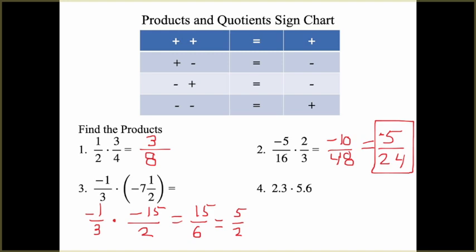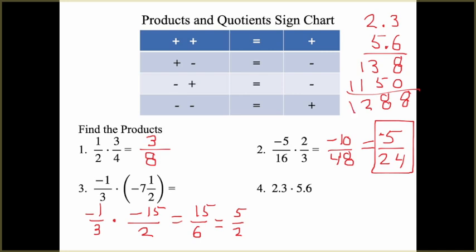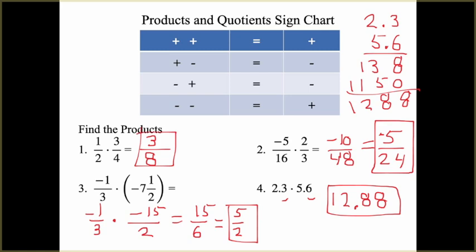Next, we have 2.3 times 5.6. Multiplying these out we get 12.88. Since we are multiplying one decimal place by one decimal place, we get two decimal places in our answer. Both factors were positive, so we have a positive answer of 12.88. That covers multiplying fractions and decimals.